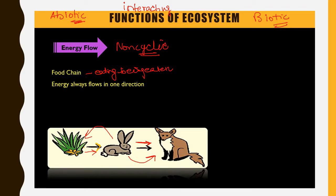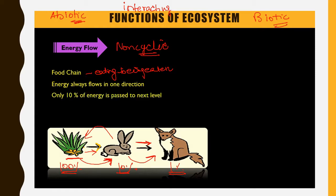Here is a very interesting fact about energy. Only 10 percent of energy is passed to the next level. So if a plant had 100 percent energy, the rabbit will get only 10 percent after eating the plant, and the fox will get only 1 percent of energy after eating the rabbit.